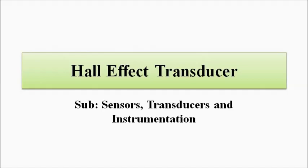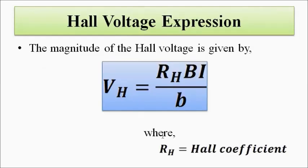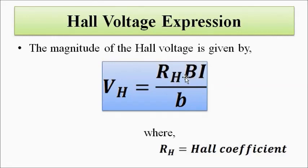Let us examine how this Hall Effect transducer can be used to measure a certain physical parameter — specifically, for the measurement of linear displacement. This can be done if the physical parameter to be measured causes a change in any of the parameters: magnetic flux density, the current, or the width of the specimen. However, the width of the specimen cannot change as it is constant, and the current flow is supplied from an external source and so that also cannot change. Therefore, the only parameter that can change here is the magnetic field strength, capital B.